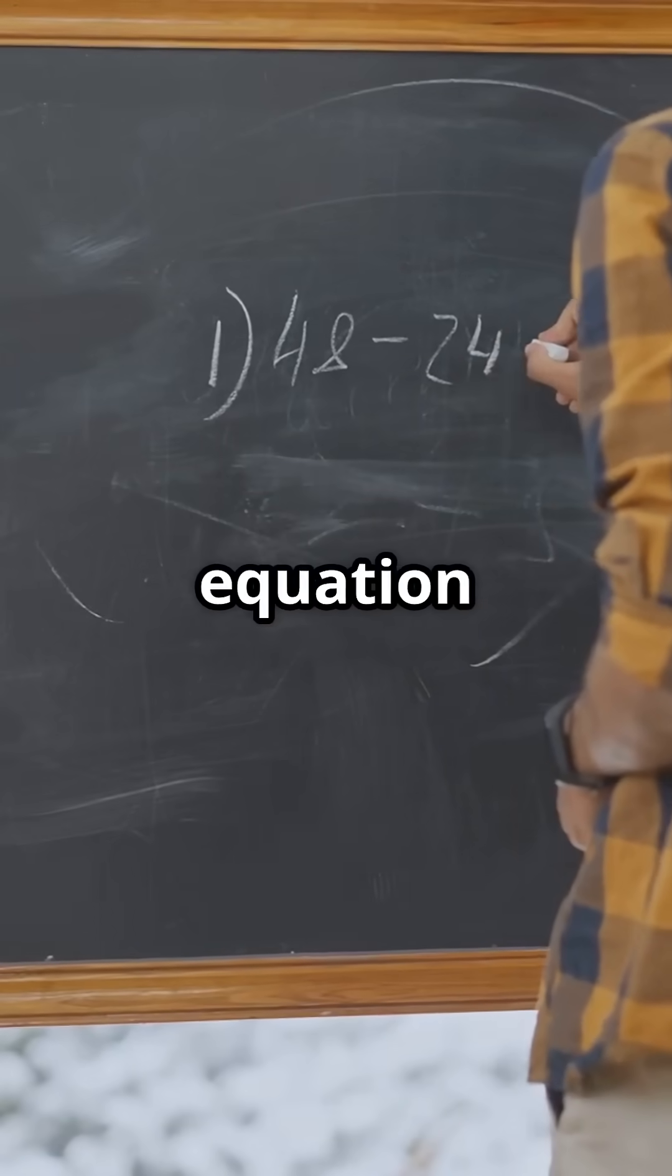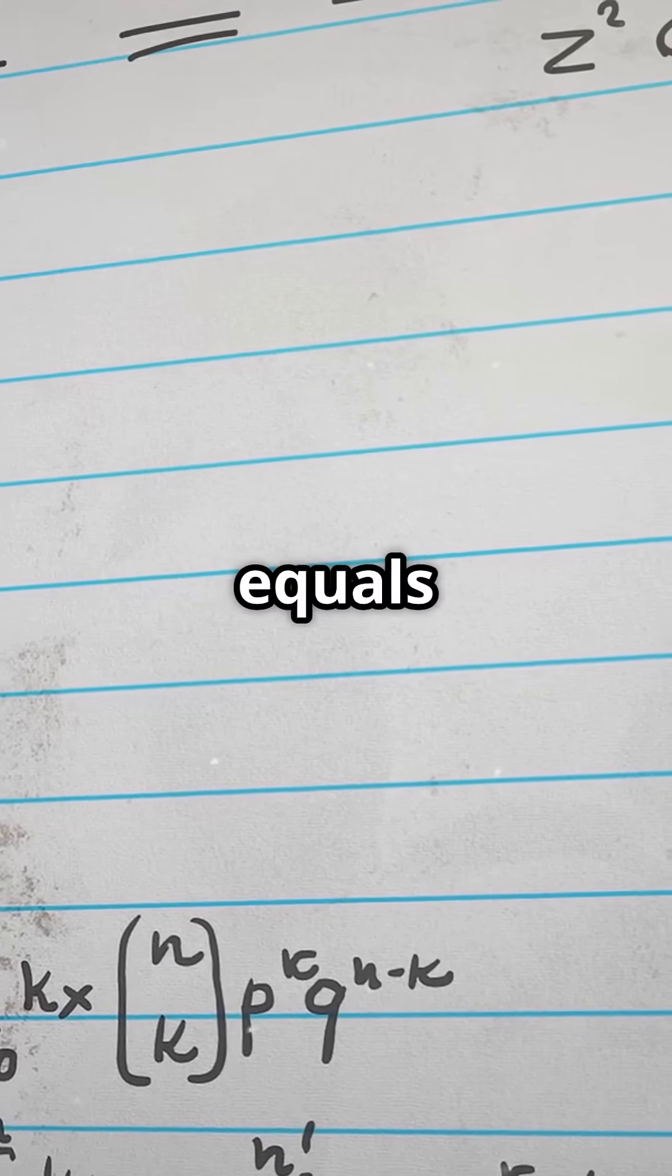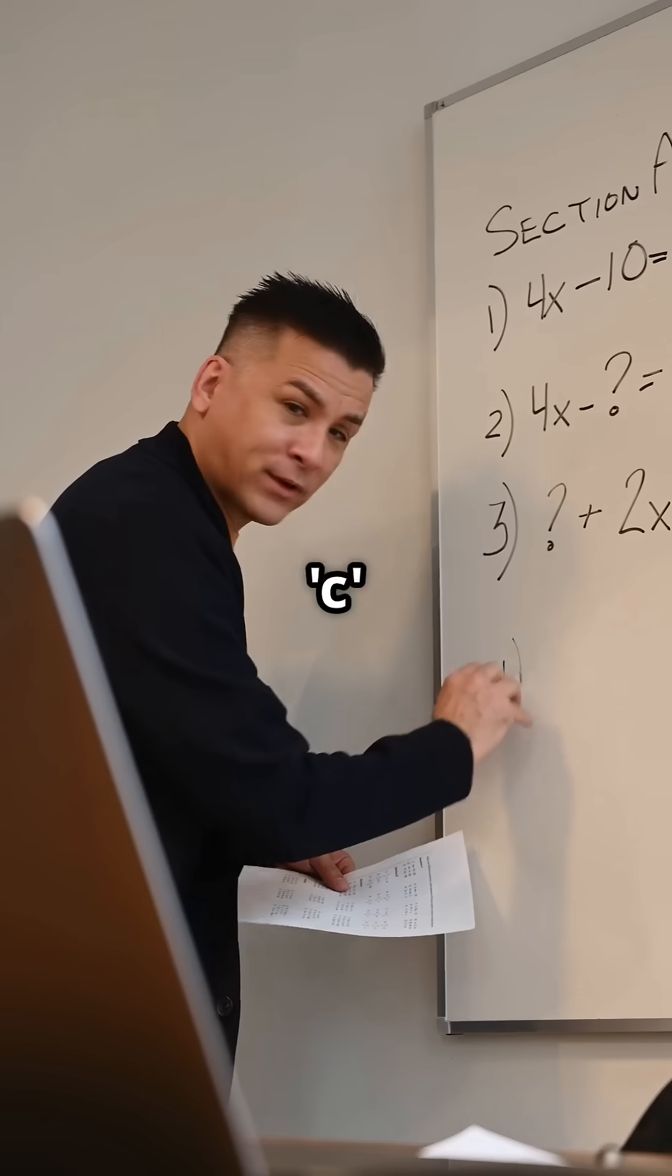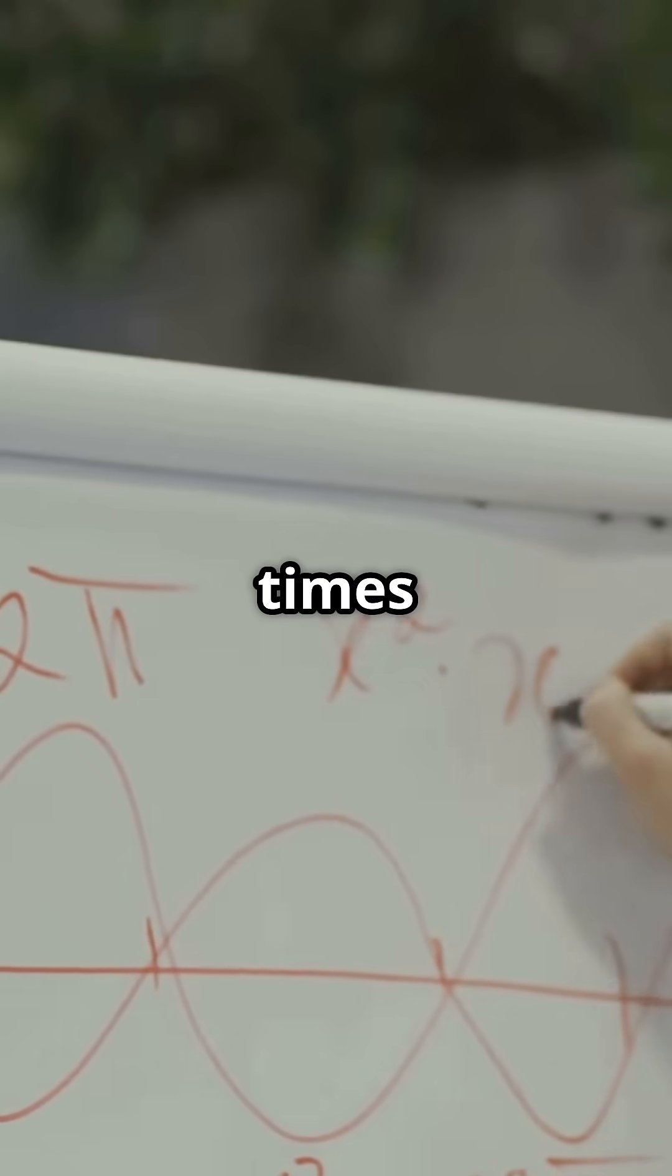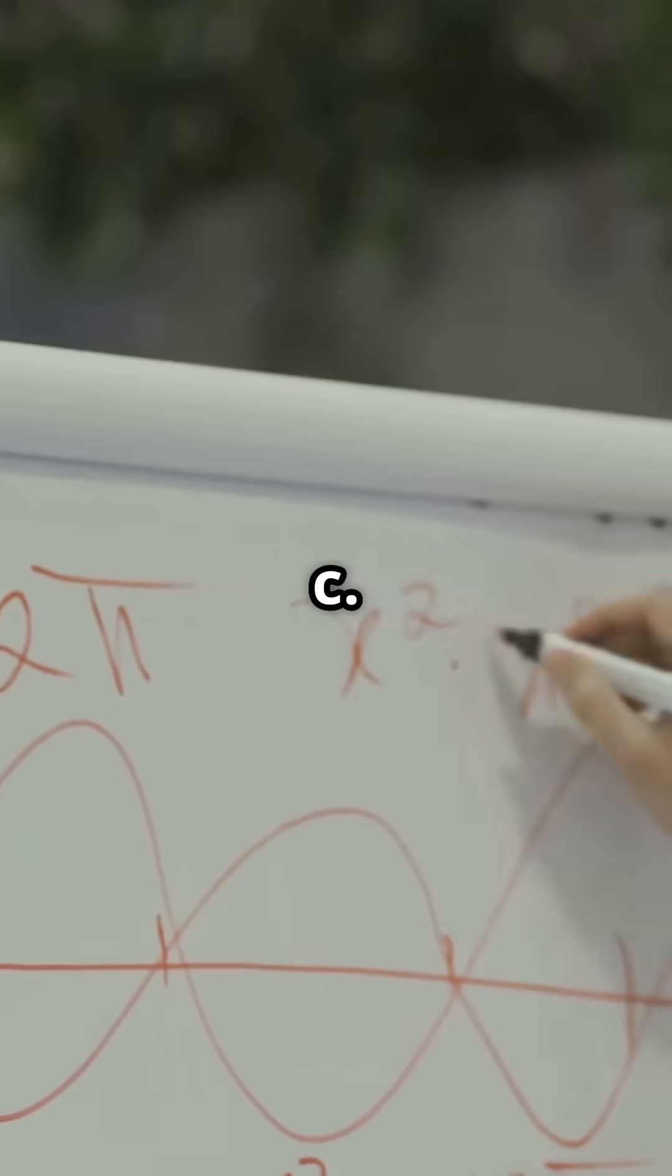Imagine you have this equation, a times x squared plus bx plus c equals 0. First, move c to the other side, a times x squared plus bx equals negative c.